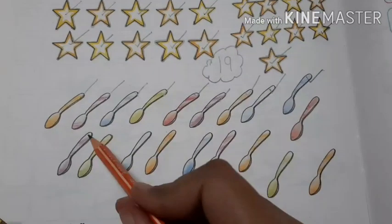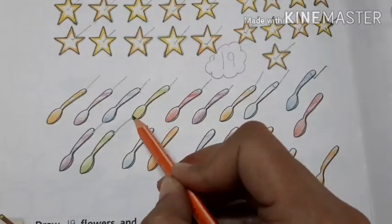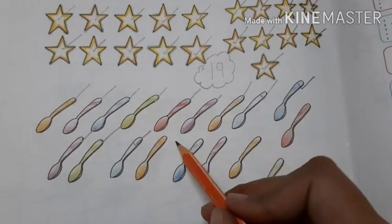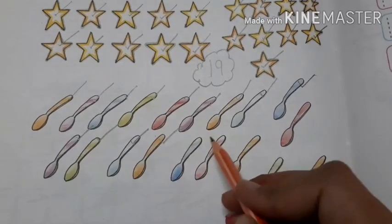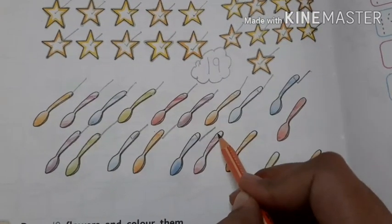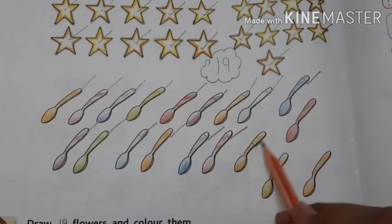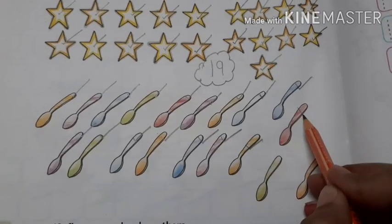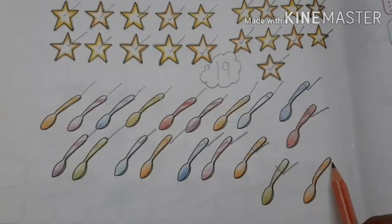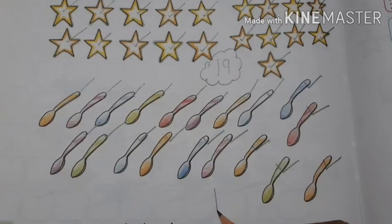What come after 9? 10, 11, 12, 13, 14, 15, 16, 17, 18, 19. How many spoons are here?